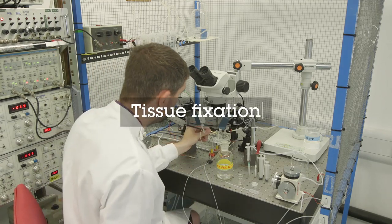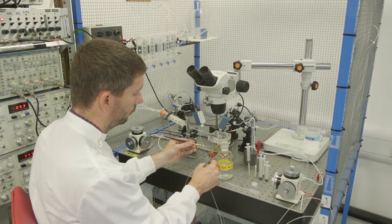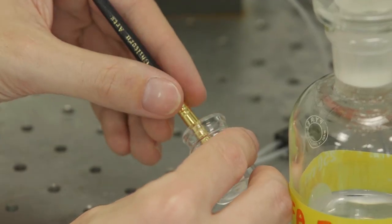Remove the brain slice from the recording chamber and submerge overnight in 4% paraformaldehyde in 0.1 molar phosphate buffer pH 7.4.